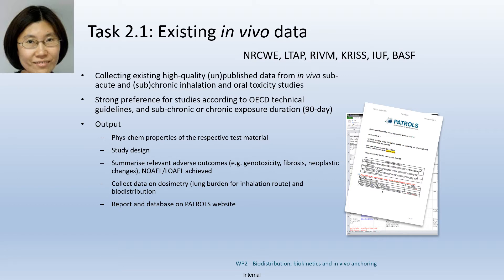For example, the database records which rat strain was used, how long was the exposure per day, how many days, and how long was the recovery period, which endpoints were determined, and we summarize the relevant adverse outcomes including general toxicity, inflammation findings, fibrosis, neoplastic changes, and if any, the determined no-adverse-effect concentration in the study. We also give emphasis on dosimetry and biodistribution — for inhalation studies, for example, lung burden — and the biodistribution of the test material in extrapulmonary organs at different recovery periods.